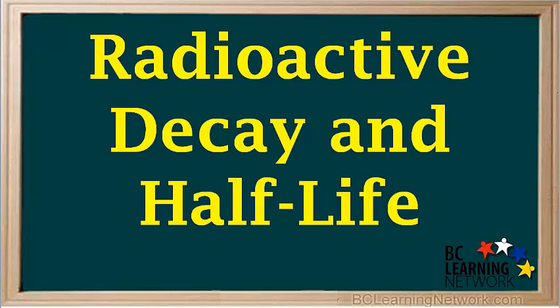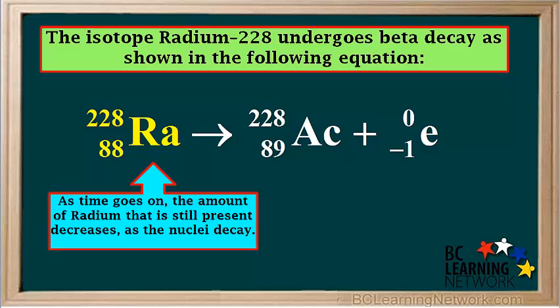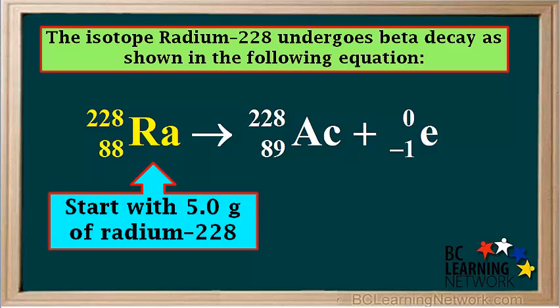In this video, we'll look at how radioactive isotopes decay and introduce a quantity called half-life. The isotope radium-228 undergoes beta decay, as shown in the equation here. As time goes on, the amount of radium that is still present decreases as the nuclei of its atoms decay. Here, we'll start with a 5 gram sample of radium-228 and see how the amount that remains varies over time.